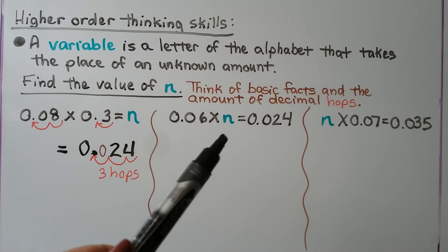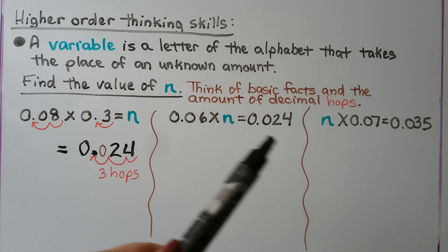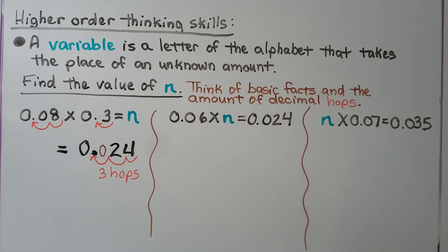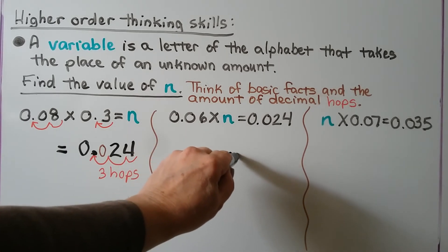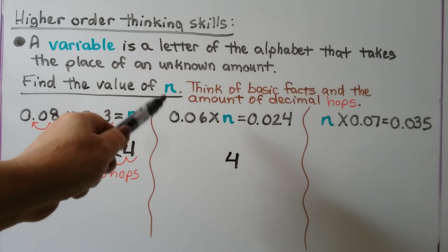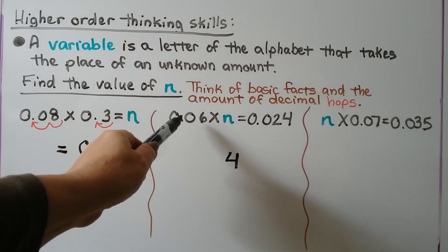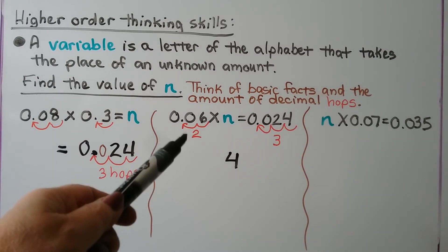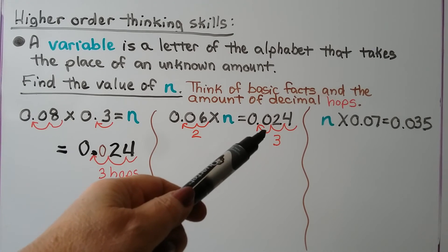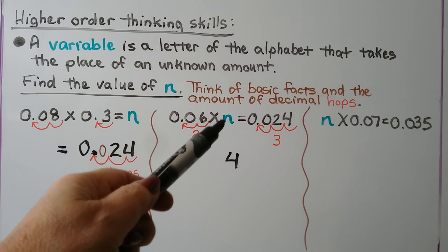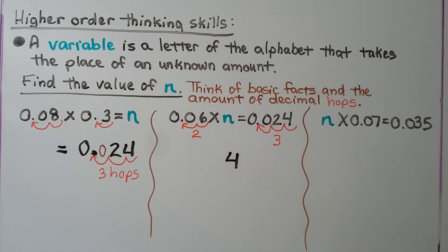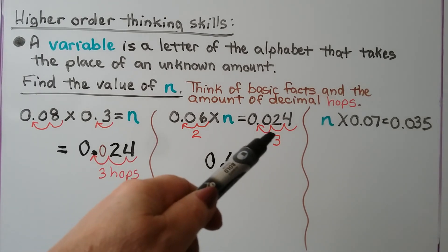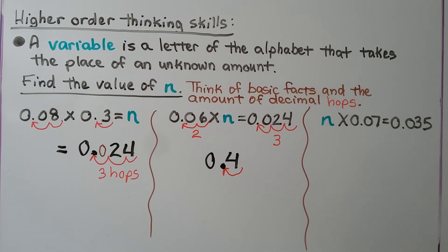We have 6 times n equals 24 thousandths. We think 6 times some number is 24 — that would be 6 times 4. We look at how many place value hops there are in the given factor and in the product. There are 2 place value hops in this factor, but the product has 3. That means n must have 1 place value hop, so that the 2 from here and the 1 from here will equal that 3. The answer: n equals 4 tenths.